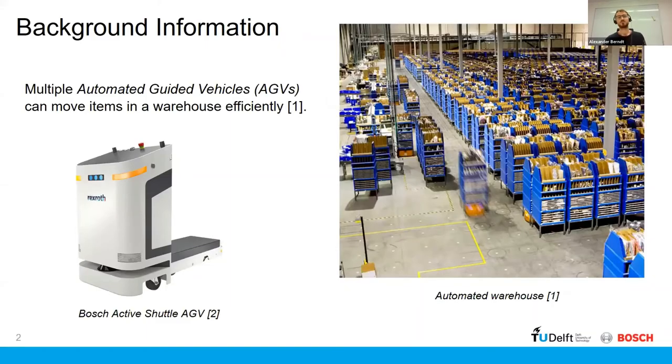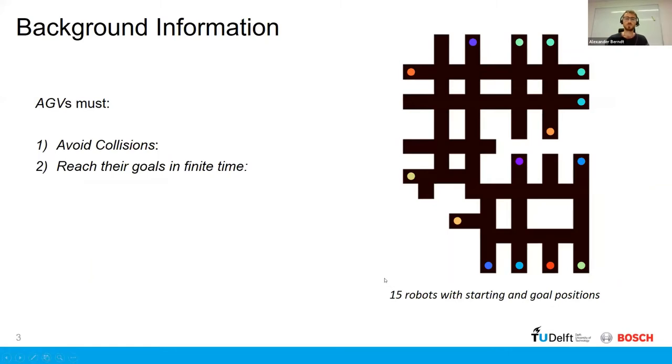So first, some background information. We have automated guided vehicles, or AGVs for short, and it's been shown that these AGVs can efficiently perform intra-logistics tasks, such as that what we can see here on the right, this automated warehouse by Amazon Robotics.